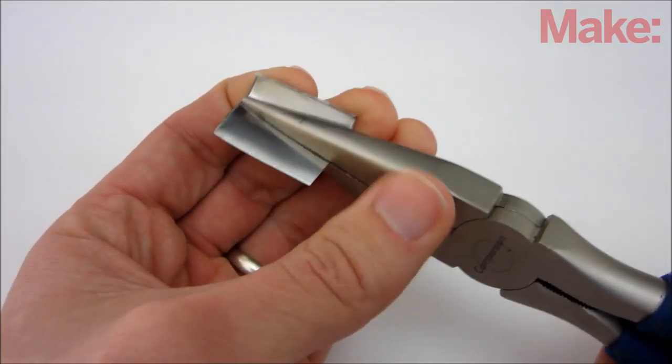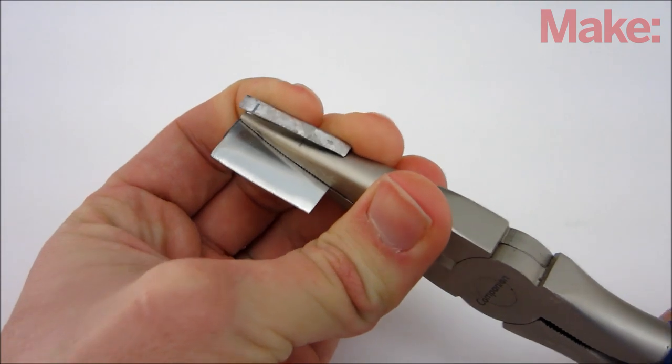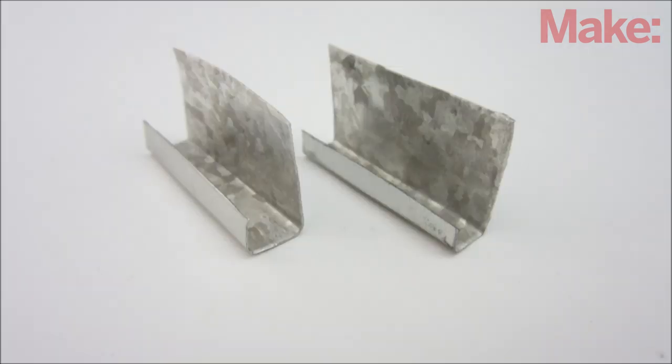Using a pair of pliers, I bent up each of the two side sections at the lines. This should bend it into a J shape. Repeat these steps again and make a second identical bracket.